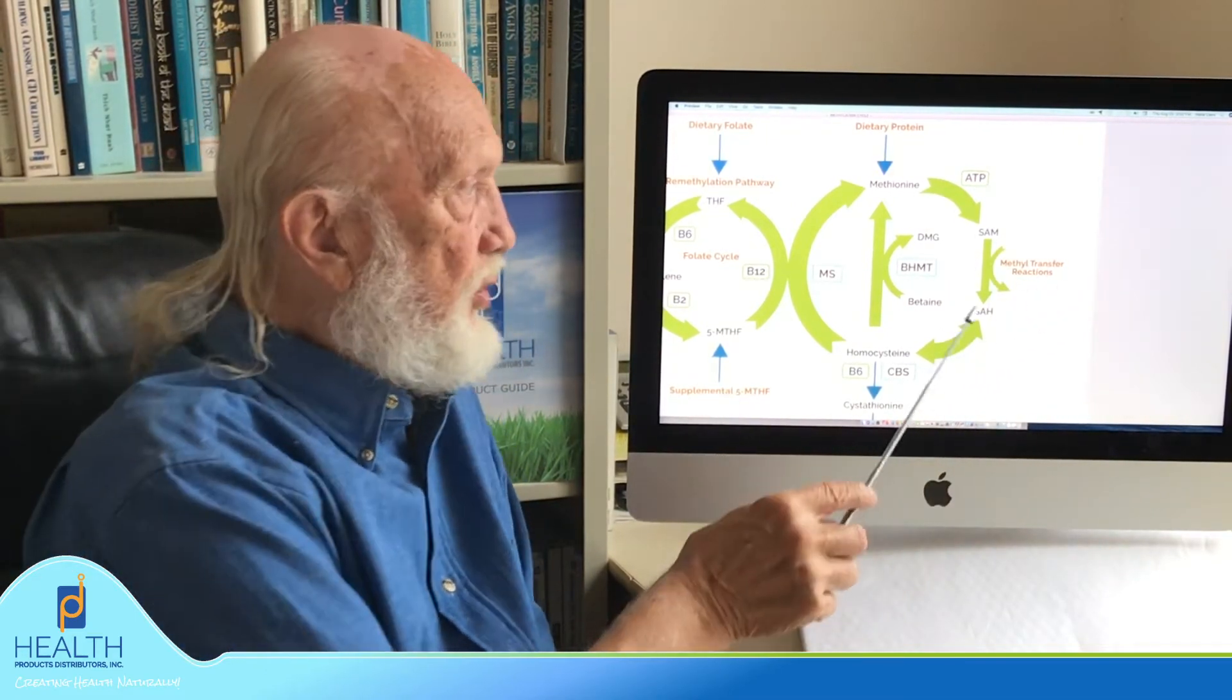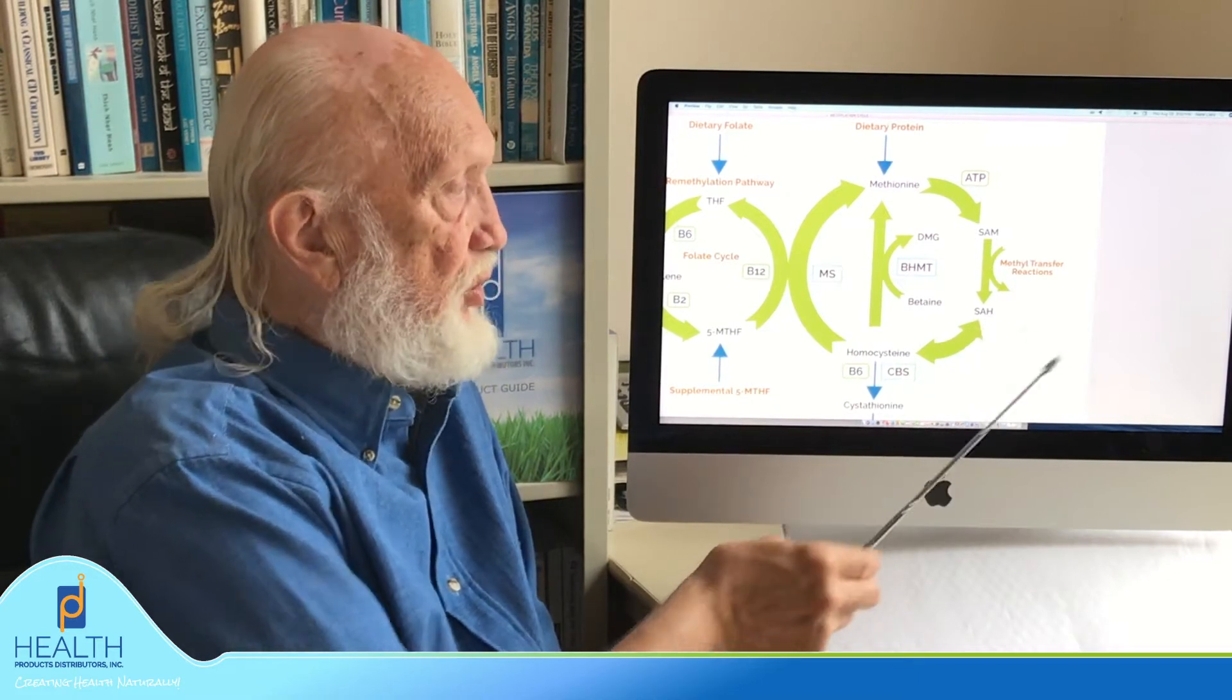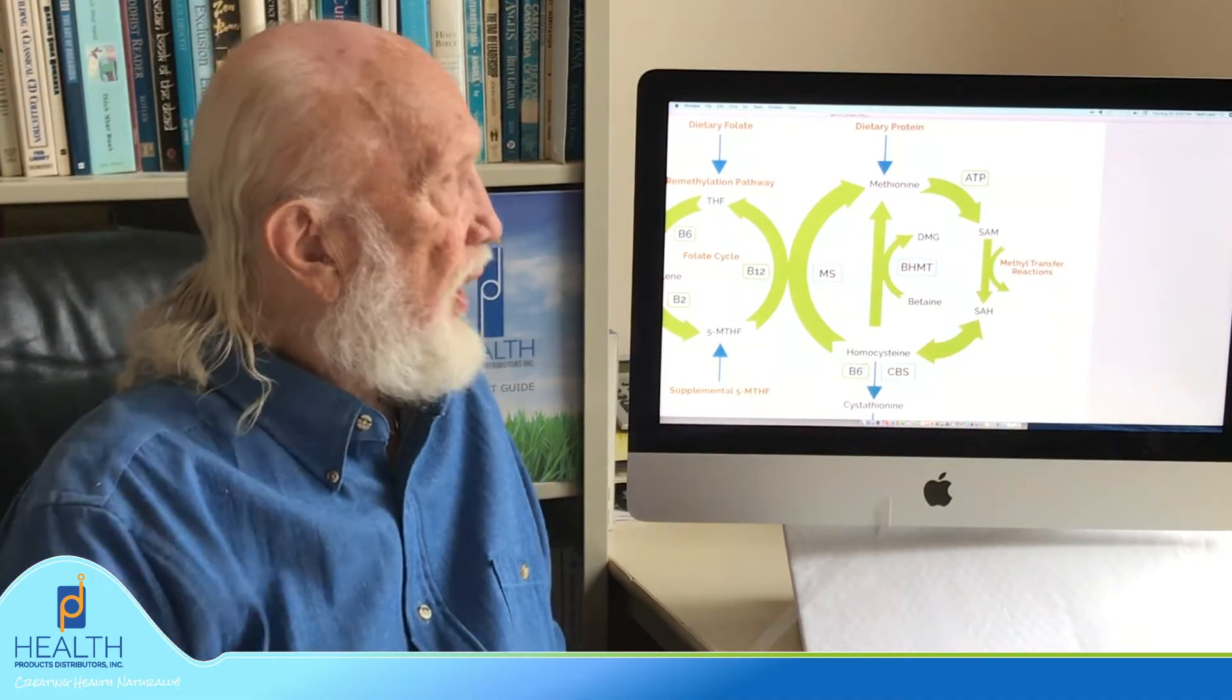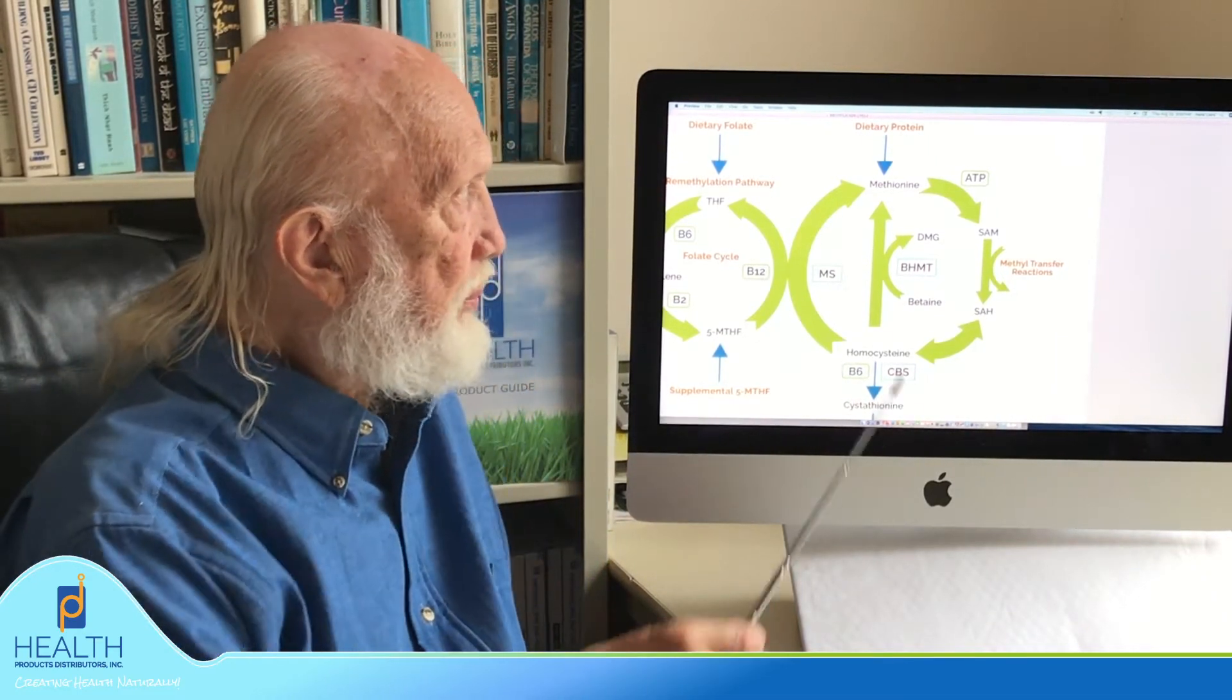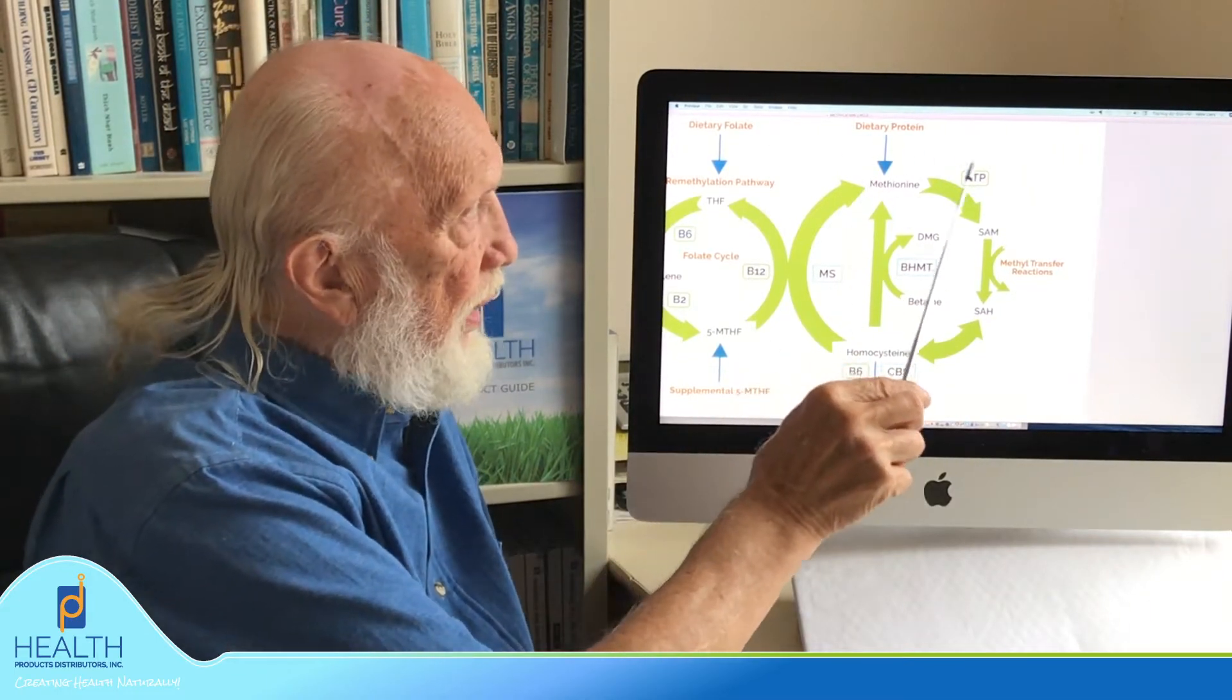As a result of giving off the methyl group, you're left with something called S-adenosyl homocysteine and then it converts into what's called homocysteine. This is probably the most important part of this diagram in terms of overall body function and transfer of methyl groups. There are hundreds of these reactions in the body. You could not live without this taking place. That kind of completes the first portion of the methylation cycle.